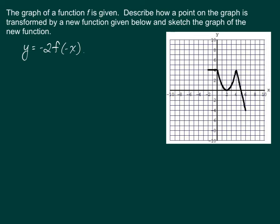On this next slide, one more graph is given, and we are going to be doing some stretching, shrinking, and reflecting. Since there are two multiplications happening, we can do them in either order we like. The first transformation is a reflection over the x-axis, and a vertical stretch by a factor of 2. We can do either of those first — I'll start with the reflection, in pink ink.